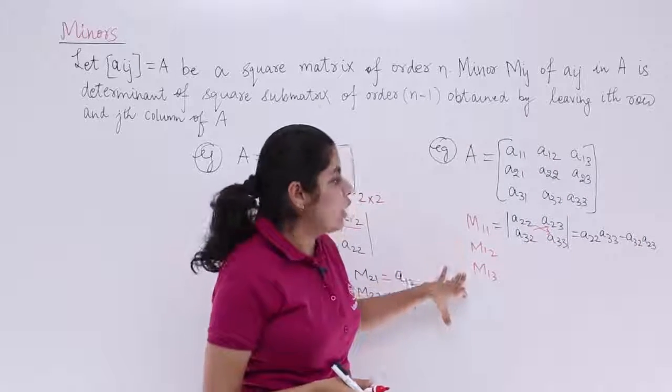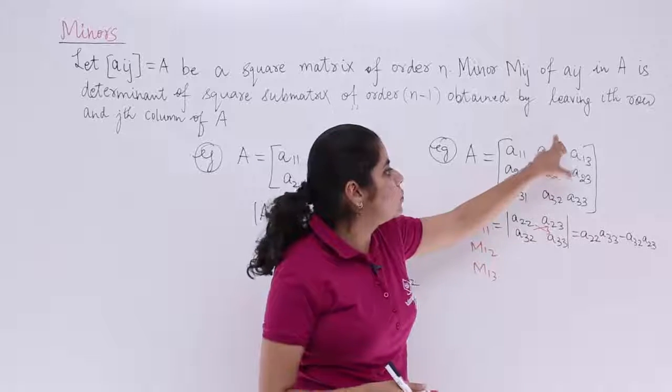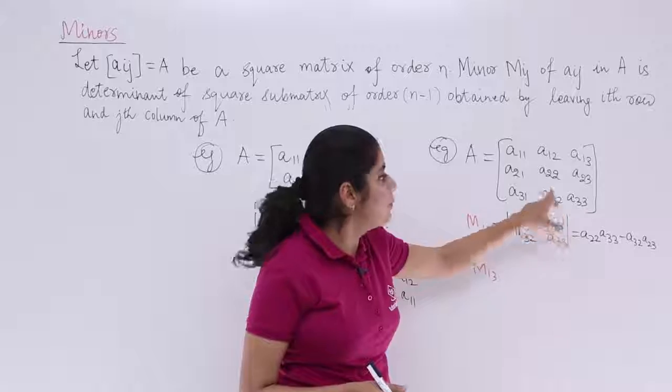Similarly, what you can do is you can solve it for M12, M13. Now let's quickly do it. M12 would be what? Leave this column, leave this row. It is A21, A23, A31, A33. Let's write it here.